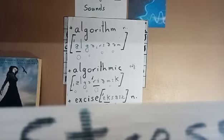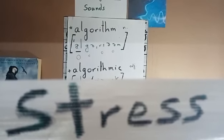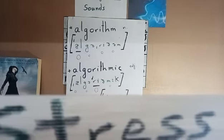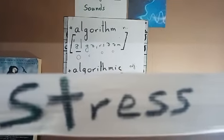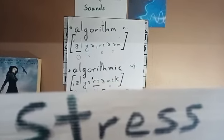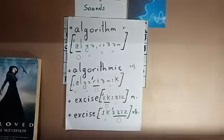To repeat: the first word — algorithm; the second word — algorithmic; and the last words — the noun is 'excise,' where the first syllable is stressed: excise. But as a verb, 'excise' — the second syllable is stressed: excise. The noun is 'excise,' the verb is 'excise.' This was the Soundy Soundy Sounds YouTube channel. Thanks for watching, goodbye!